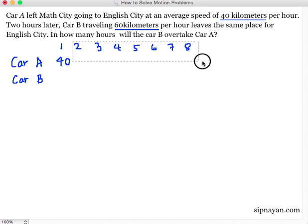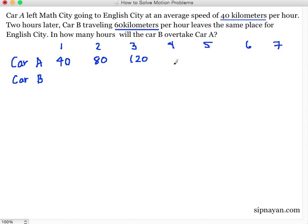So 2 hours, 3 hours, 4 hours, 5 hours, 6 hours, 7 hours. Sana hindi naman siya abot ng sobra pa sa 7. So 40 kilometers per hour. After 1 hour, 40 na yung travel ng Car A. And then after 2 hours, 80 na. And then after 3 hours, 120. Mag-add lang tayo ng 40: 160, 200, 240, and 280.